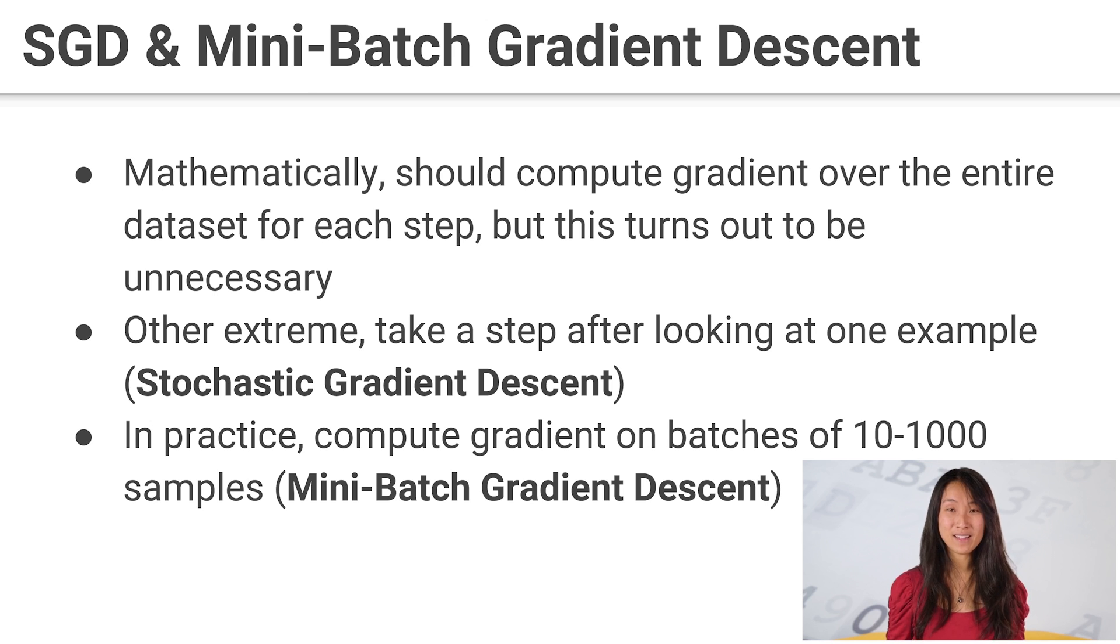Empirically, people have found that rather than using the entire dataset, if they compute the gradient of the loss function over a single example, that mostly works too. Even though they'd have to take more overall steps, the amount of total computation in order to reach a good solution is often much smaller. This is called stochastic gradient descent.